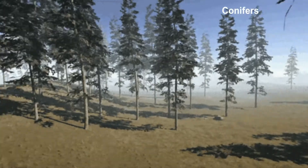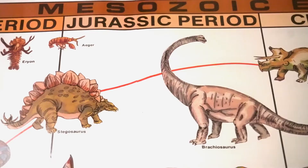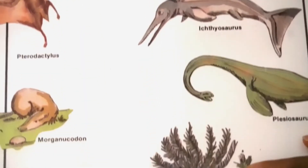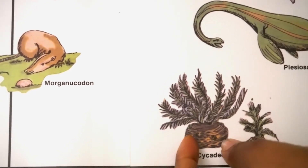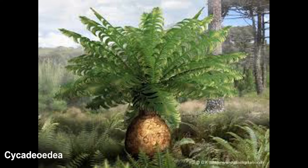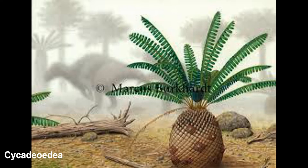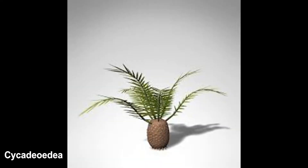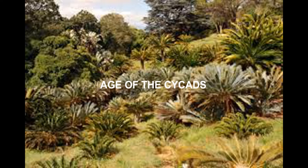Conifers, cycads, and ginkgos spread across the world. The cycadeoids, for example, resembled a low palm tree with a short, stubby trunk. It was so colorful that it looked as though it had been decorated with colored leaf-like flowers. However, the cycadeoids was neither a palm tree nor a flowering plant. These plants were so prevalent during the Jurassic period that some biologists believe it became the age of the cycads.